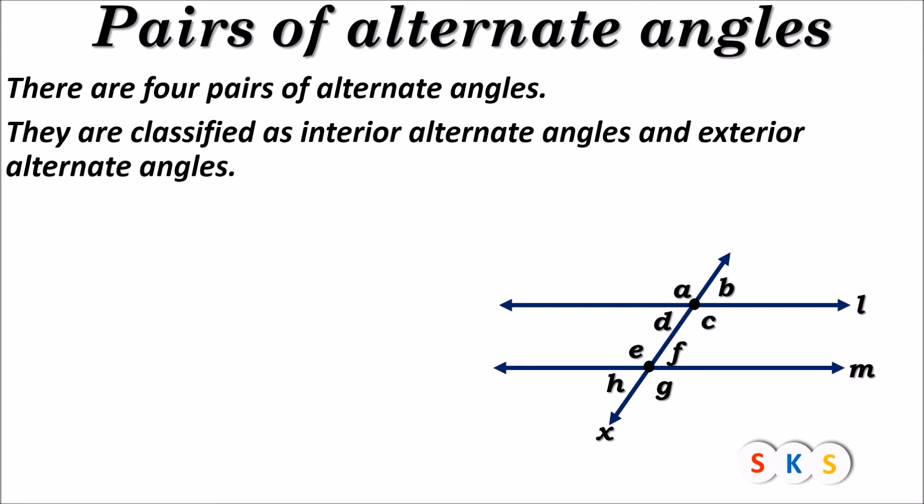First, we will see interior alternate angles. The word 'interior' means inside. Interior alternate angles are pairs of angles which are formed inside the parallel lines. You can see in this figure that angle D and angle F are inside the parallel lines, and this is one pair of interior alternate angles.